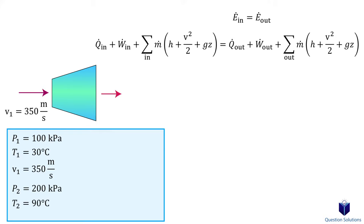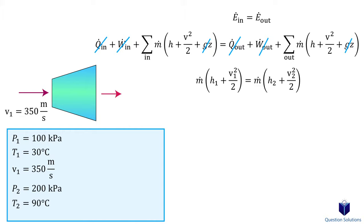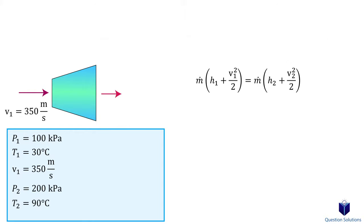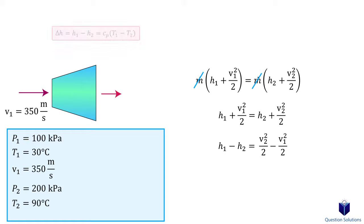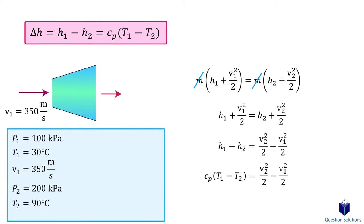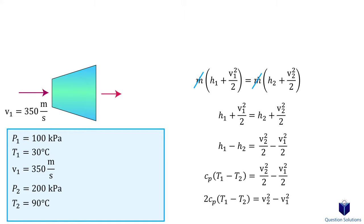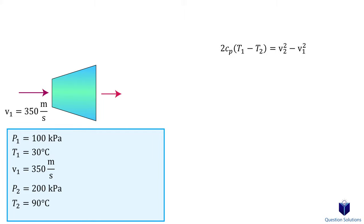Since this is a diffuser problem, there is no work, heat transfer is negligible, and potential energy change is also negligible. We only need to consider enthalpy and kinetic energy, so our equation simplifies. The mass flow is the same since it's one inlet and one exit, so we can cancel it out. We bring enthalpy to one side and kinetic energy to the other. Enthalpy is replaced using the specific heat equation, then we multiply everything by 2 to eliminate fractions. We need the specific heat value, so we calculate the average temperature.